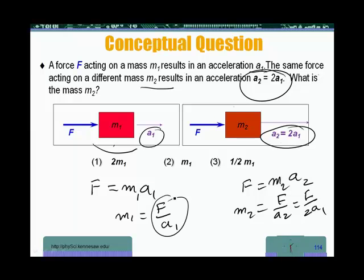So I'm going to try to isolate what I have here. That's what I have here. So I'm going to be left with m2 is equal to one half times the term F over a1. In other words, m2 is going to equal m1 over 2. So the mass m2 is half as much as m1.